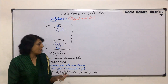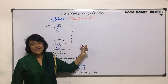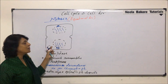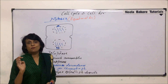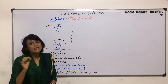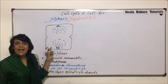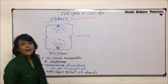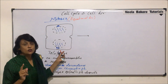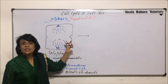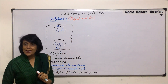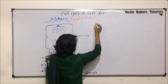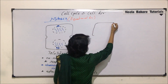Cytokinesis starts by the end of anaphase or the beginning of telophase, so there is a little overlapping. Telophase completes nuclear division — one nucleus of the parent cell has divided into two daughter nuclei. Prophase, metaphase, anaphase, and telophase are the sub-stages of karyokinesis. In animal cells, cytokinesis takes place by invagination of the plasma membrane, and this furrow becomes deeper and deeper until it joins in the middle.